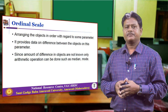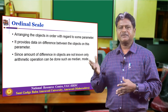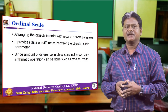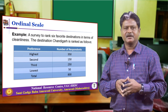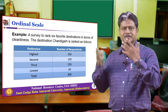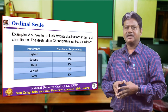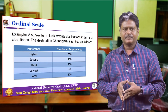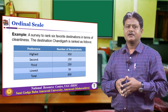The next scale is the ordinal scale, where we arrange objects in order with regard to some parameter. It provides data on differences between objects on these parameters. Since the amount of difference between objects is not known, only arithmetic operations such as median and mode can be done. For example, in a survey, respondents are asked to rank 5 different destinations in terms of cleanliness. For Chandigarh, out of 800 total respondents, 350 gave the highest rank, 150 gave the second rank, 250 gave the third rank, and 50 gave the lowest rank. This helps us judge where respondents place Chandigarh in terms of cleanliness.